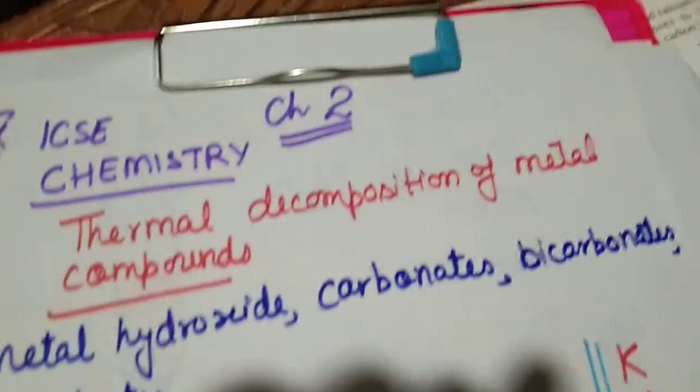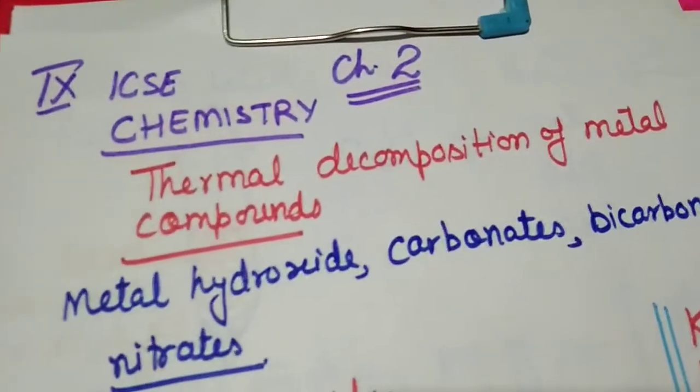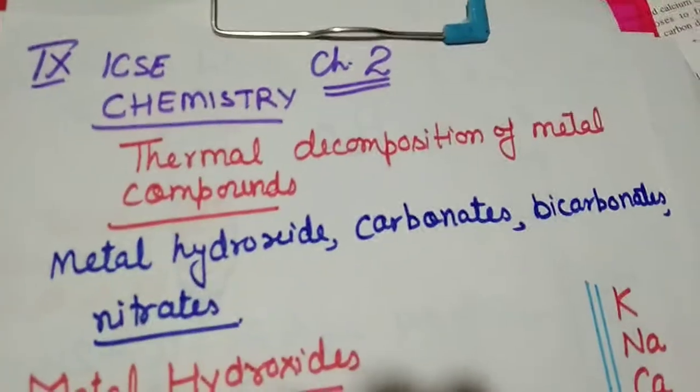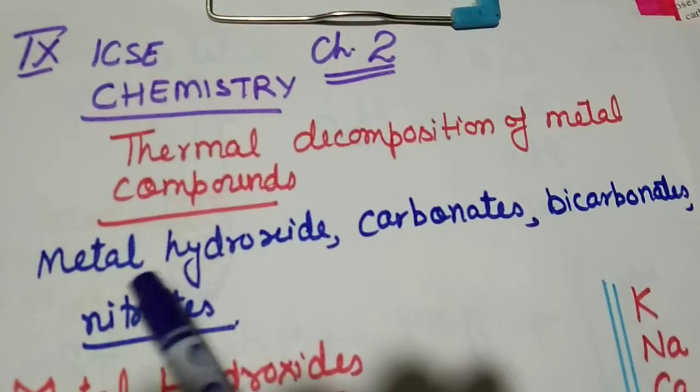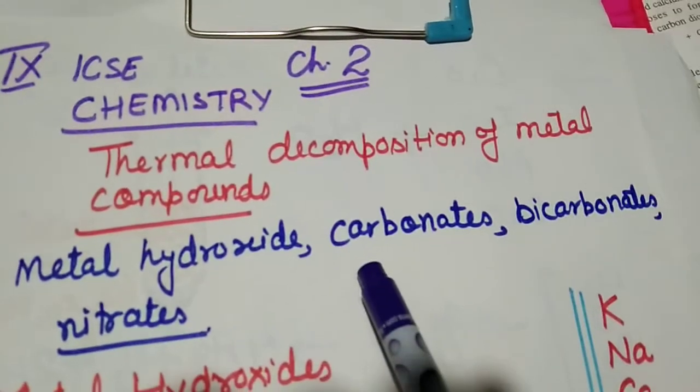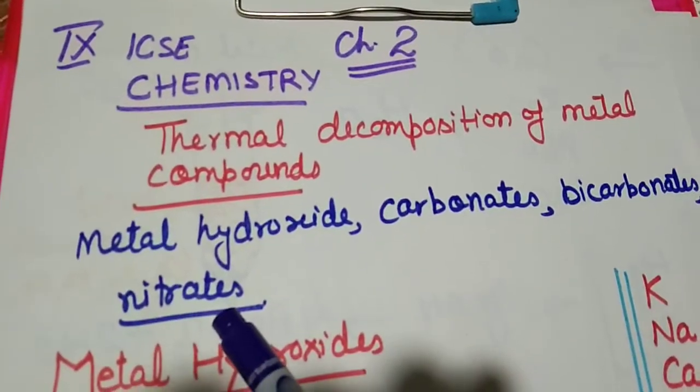So today we will discuss thermal decomposition of metal compounds. Metal compounds include metal hydroxides, carbonates, bicarbonates and nitrates.